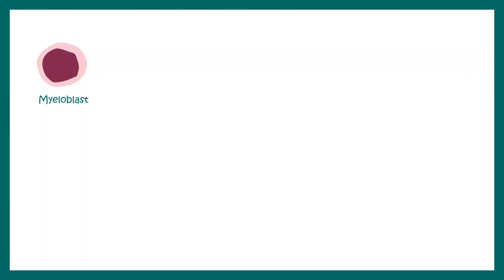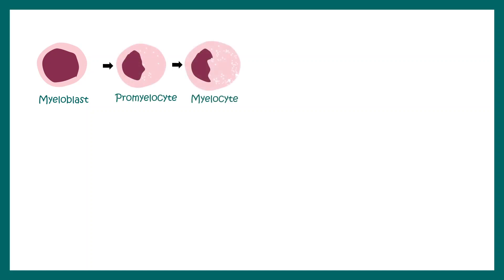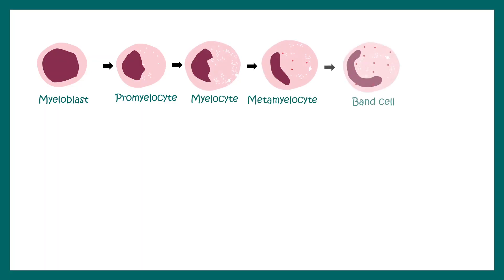Let's look at the development of neutrophils in a bit more detail. From the myeloblast, neutrophils develop in different stages: it becomes a promyelocyte, then myelocyte, metamyelocyte, band cells, and eventually they become mature neutrophils.